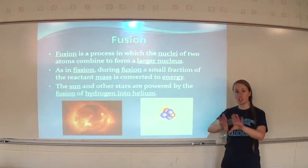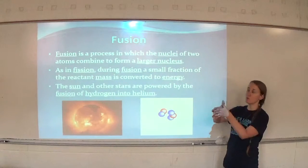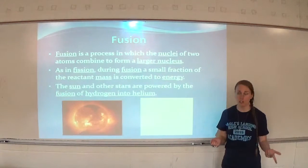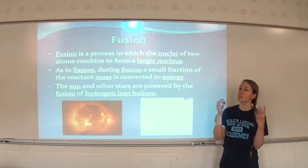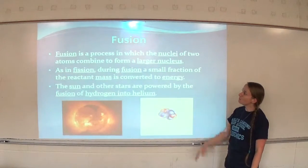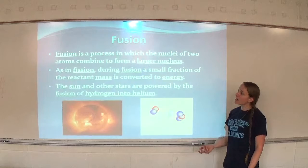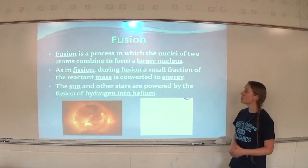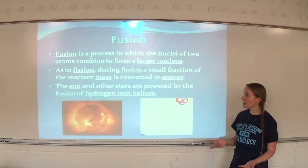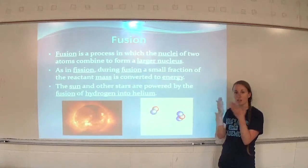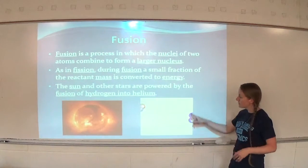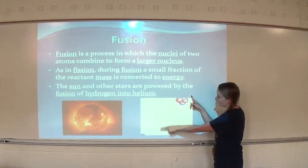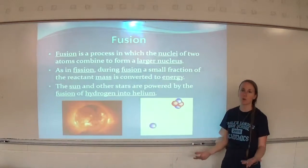Fusion, on the other hand — fission is splitting, so fusion will be combining. Fusion is a process in which the nuclei of two atoms combine to form a larger nucleus, so we're talking about smaller particles here. During fusion, a small fraction of the reactant mass is converted into energy, and that's what we want to use. The sun and other stars are powered by fusion of hydrogen into helium — two hydrogens come together and make a helium atom. You can watch the two collide, and then a larger nucleus leaves, along with another particle.